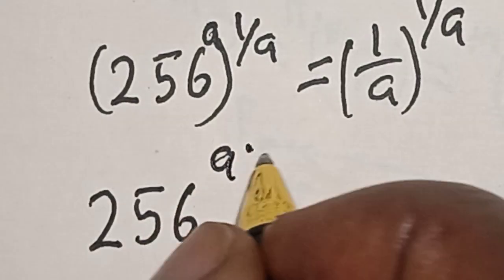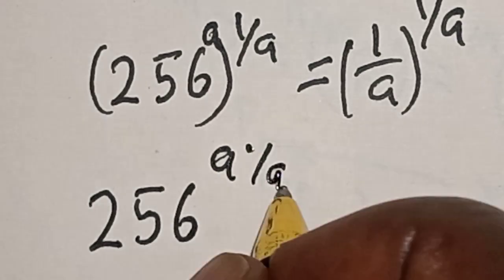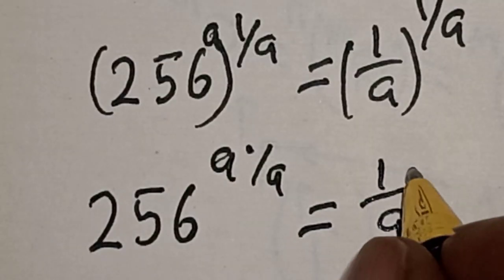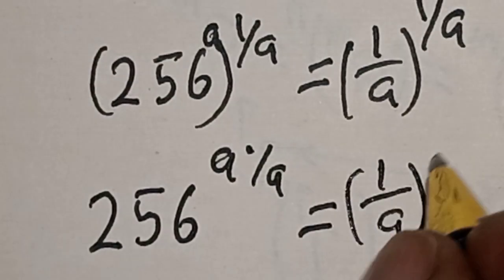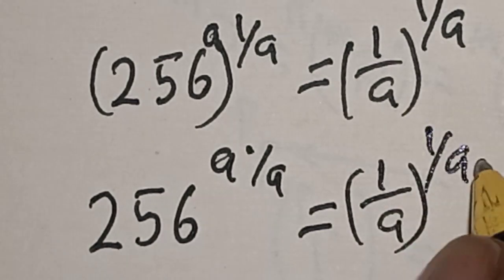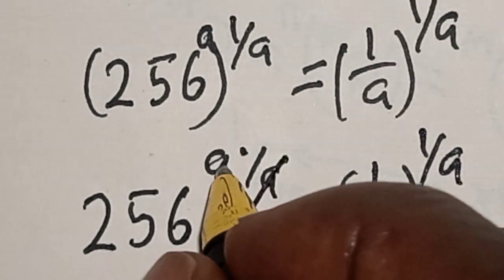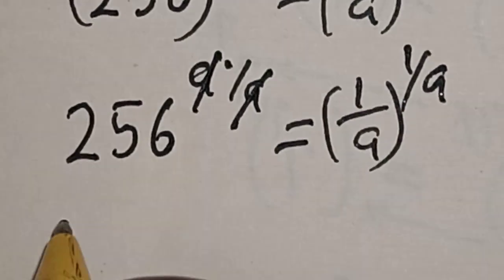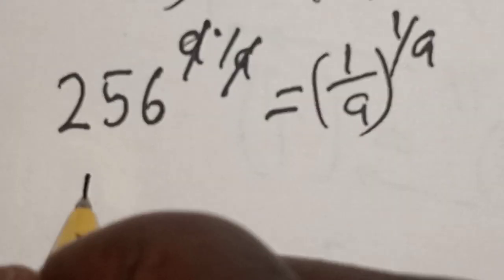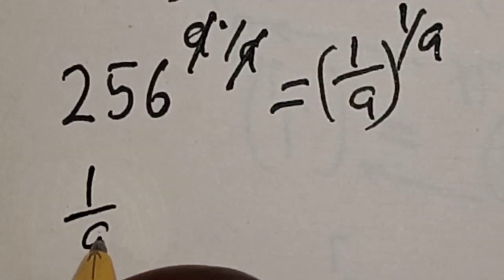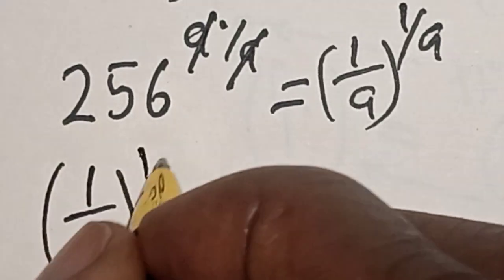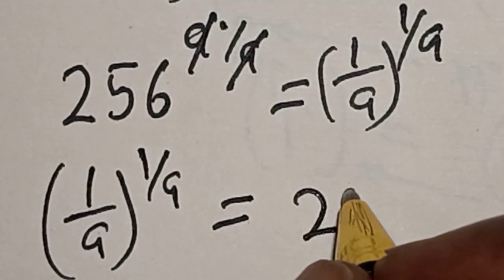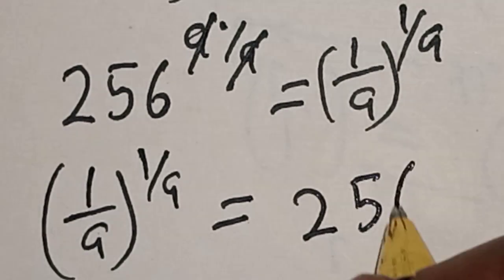256 raised to power a multiplied by 1 over a is equal to 1 over a raised to power 1 over a. So the 'a' terms cancel, and we are left with: 1 over a raised to the power of 1 over a is equal to 256.